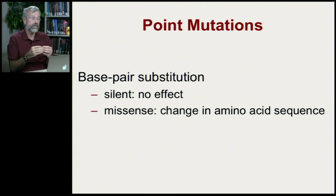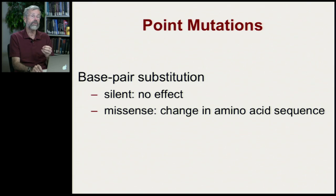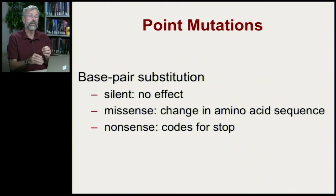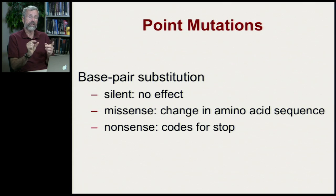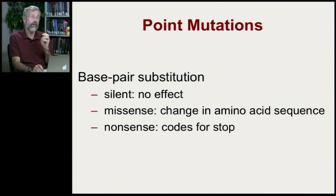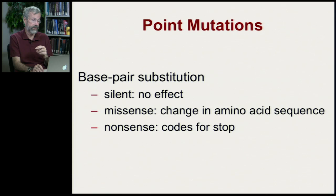Second are called missense base pair substitutions, and this will be a difference in amino acid sequence. Third is what's called a nonsense substitution. As those videos showed in the last lecture, there is a particular codon that when it's reached says everything stops — that's the end of the protein. And if you have a mutation in the middle of what's otherwise a long protein, it'll stop and the protein will be much shorter. So that's a nonsense mutation.